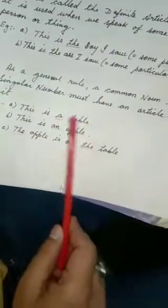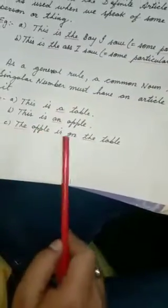Number 4, as a general rule, a common noun in the singular number must have an article before it. Example: This is a table. This is an apple. The apple is on the table.